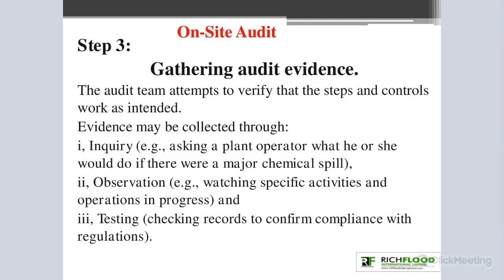The second way of getting evidence is by observation — watching specific activities and operations in progress. As an auditor, once you are in the facility, observation is key. It's not every action that is seen that is questioned, but you need first-hand information of what is obtainable and practiced at the site. The third way to gather evidence is by testing — checking records to confirm compliance with regulations.